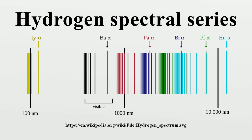There are emission lines from hydrogen that fall outside of these series, such as the 21 cm line. These emission lines correspond to much rarer atomic events such as hyperfine transitions. The fine structure also results in single spectral lines appearing as two or more closely grouped thinner lines, due to relativistic corrections.